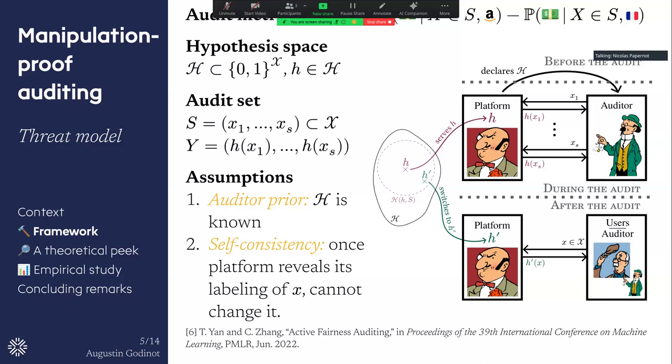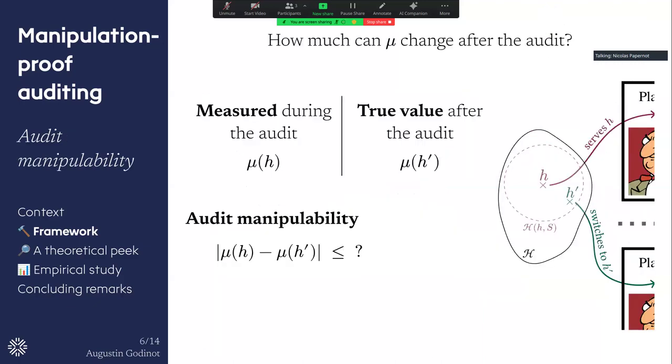So for example, the auditor already conducted the audit, and to verify that the conclusions are still valid, they will just resend the queries and look again at the answers to verify that they are the same. And so as I said, the goal is to bound the effect of this model change by the platform on the parity metric, so on the demographic parity for example.